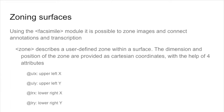The TEI uses the facsimile module. We have seen that already. We will see how it works in more detail and in depth. In particular, we will see how to use the element called zone. Zone is in fact the one that is able to say: this is a particular area of my image that I like to talk about or connect to a transcription.